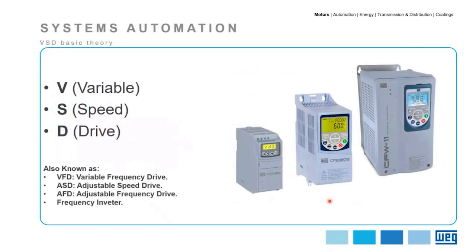To better understand the energy saving possibilities, let me review some basic theory. A VSD, or variable speed drive, is also known in the industrial field as VFD (variable frequency drive), ASD (adjustable speed drive), AFD (adjustable frequency drive), or frequency inverter. At the end of the day, they are the same thing, and it's used basically to control the speed of an AC induction electric motor. VEG also has VFD solutions suitable for permanent magnet motors as well.